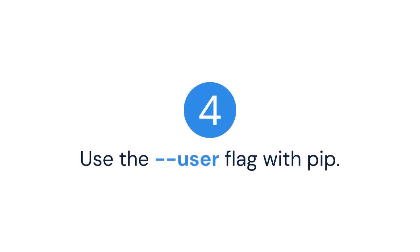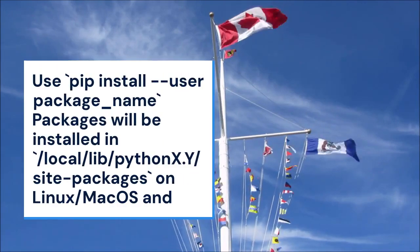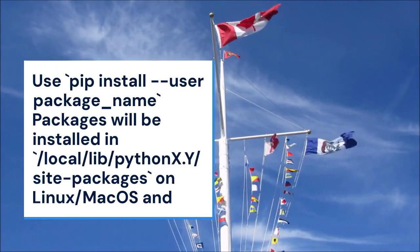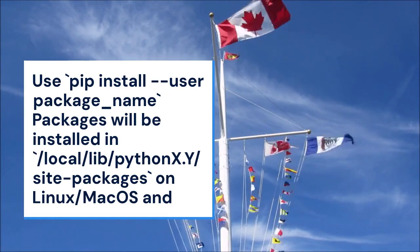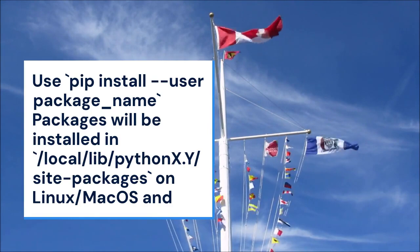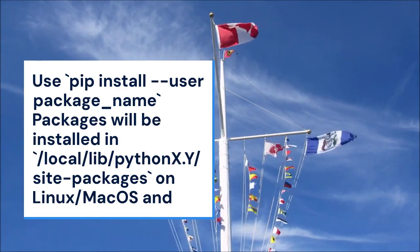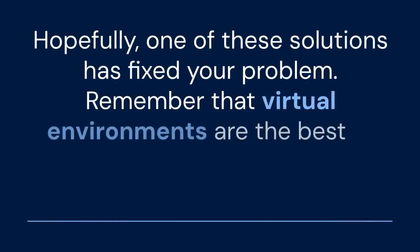Four: use the --user flag with pip. This installs packages to your user directory and you don't need administrator rights. Use pip install --user package_name. The packages will be installed in ~/.local/lib/pythonX.Y/site-packages on Linux/macOS, and %APPDATA%\Python\PythonXY\site-packages on Windows. Note that you might need to add this directory to your PYTHONPATH environment variable.